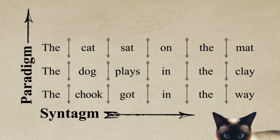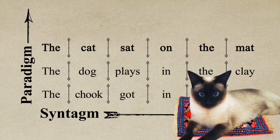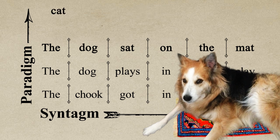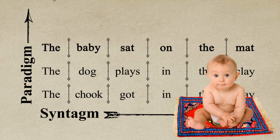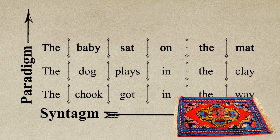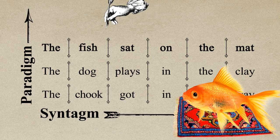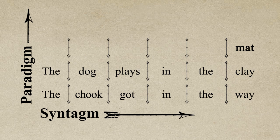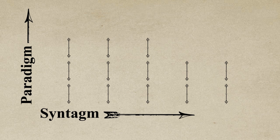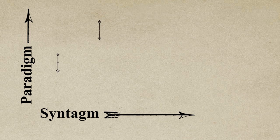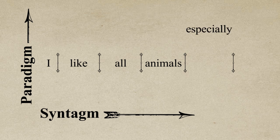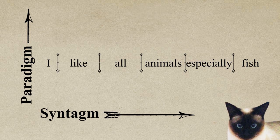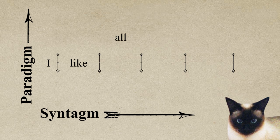The paradigm refers to a group of linguistic objects which have similarities and that can replace one another in the syntagm. Take the earlier syntagm, 'the cat sat on the mat.' You can replace 'cat' with 'dog' or 'baby', but in this particular syntagm, you can't use a word like 'fish' — fish just can't sit. But in a different syntagm, 'fish' could be used to replace 'cat'; for example, in the syntagm 'I like all animals, especially fish.' So just because some objects have a paradigmatic relationship in one specific syntagm doesn't mean that it holds in all contexts.